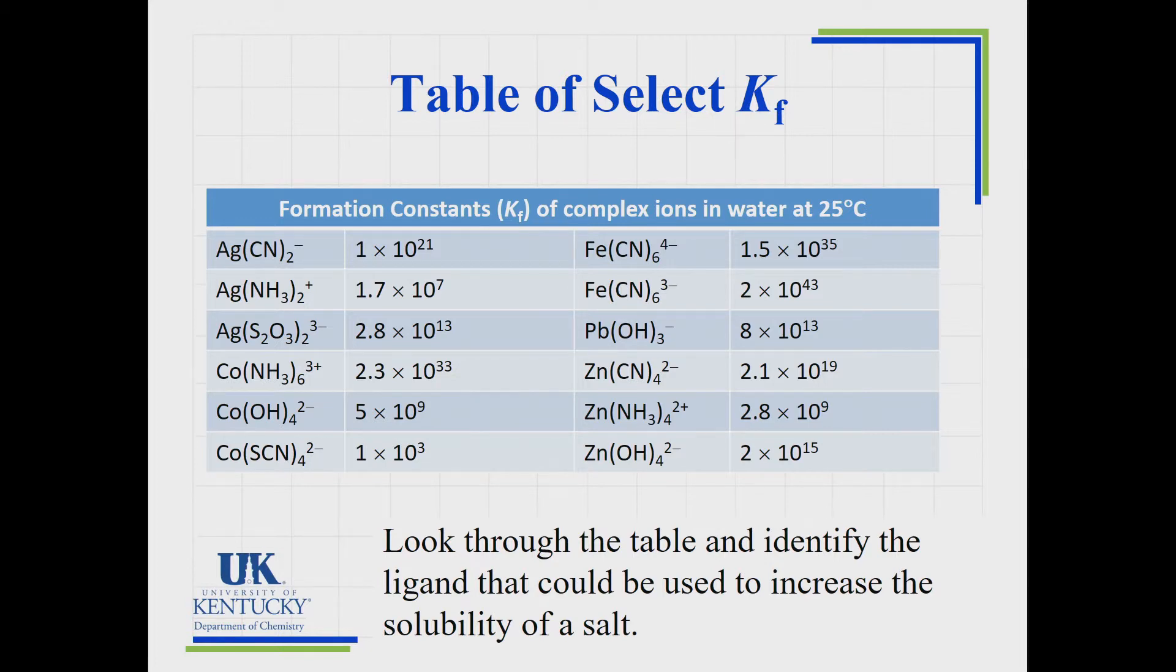So look, there's a lot of repeats there. We've got CN-. If we added that ligand, we could increase the solubility of silver salts, iron salts, and some zinc salts. So dumping in a source of cyanide ions would increase their solubility.